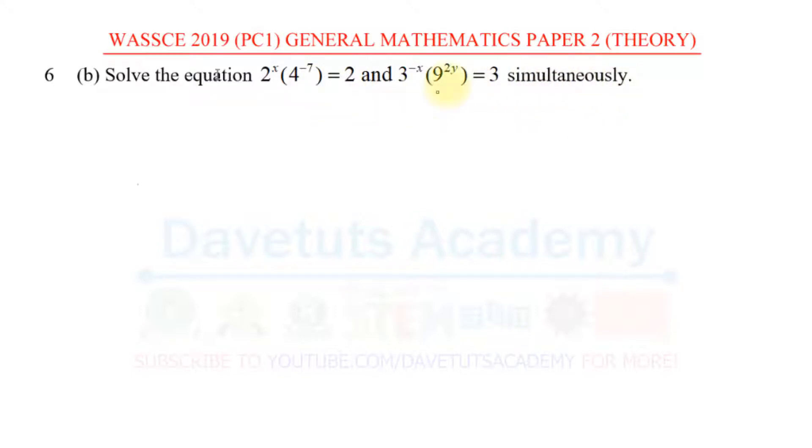Now, look at these two equations. In the first case we have only x. In the second case we have x and y. Meaning that if we are able to find the value of x in the first case, we can substitute into the second case to find the value of y, and that exactly is what we are going to be doing.